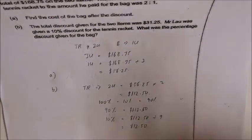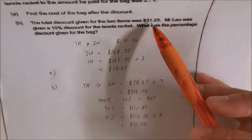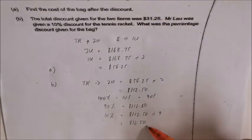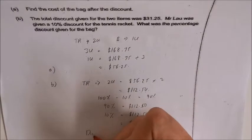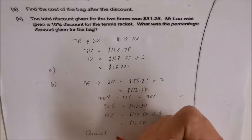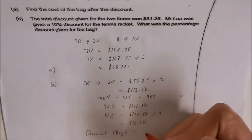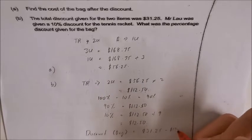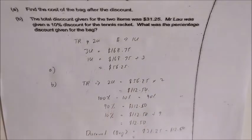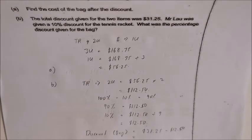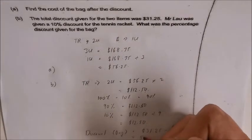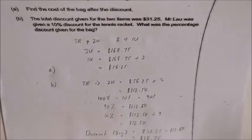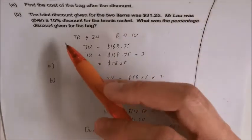The total discount for the two items was $31.25. If the discount for the tennis racket is $12.50, then the discount for the bag will be $31.25 minus $12.50, which gives us $18.75. So how do we find the percentage discount given for the bag?